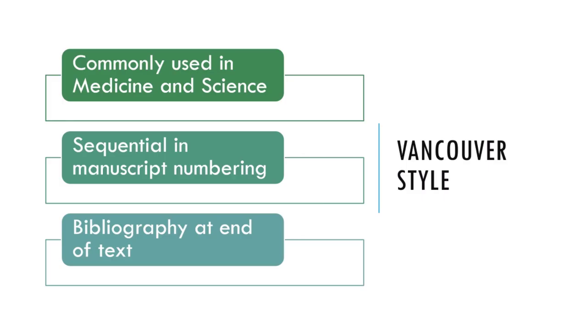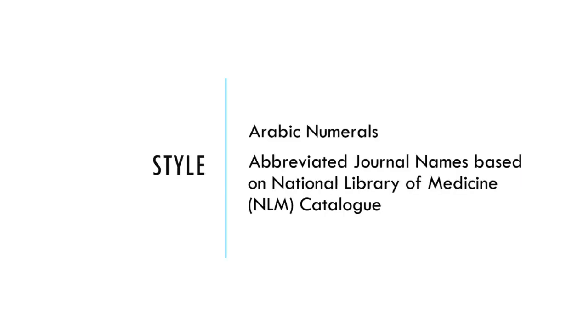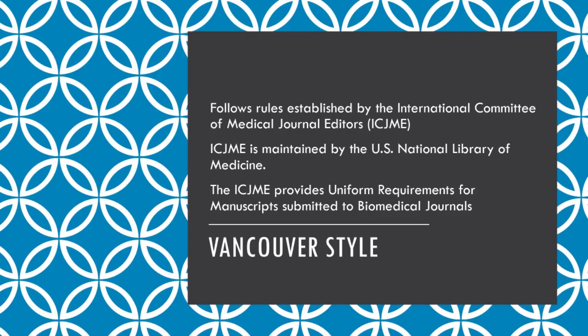The Vancouver style of citation is a common style used in medicine and science. It uses sequential in-manuscript numbering with a bibliography provided at the end of the text. The numbering is done as Arabic numerals, and journal names are abbreviated based on the National Library of Medicine catalog — the NLM catalog. The Vancouver style follows rules established by the International Committee of Medical Journal Editors, maintained by the U.S. National Library of Medicine, which provides uniform requirements for manuscripts submitted to biomedical journals.